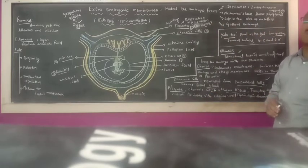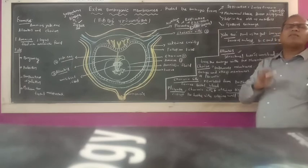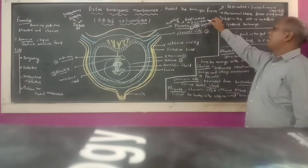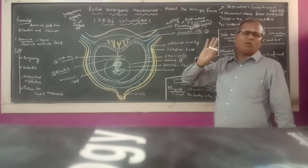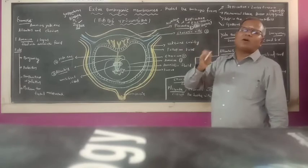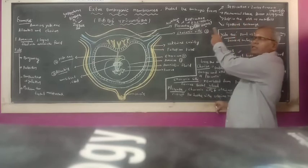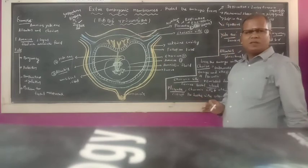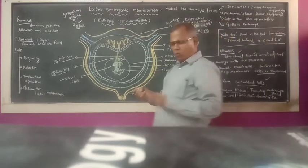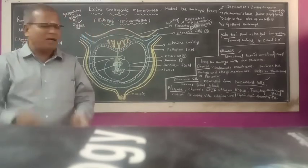The placenta plays a vital role in nutrition, respiration, and excretion. So nutrition, respiration, and excretion of the embryo take place with the help of this placenta.